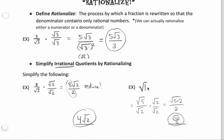8 divided by 2 is 4, and we still have the square root of 2 attached at the back. One more time — this time we're going to use the quotient property. We're going to take our fraction under one square root and give the top and bottom their own square root. So we have the square root of 5 over the square root of 2. We want to get rid of the square root of 2 in the denominator, so we'll multiply top and bottom by the square root of 2 and rationalize.